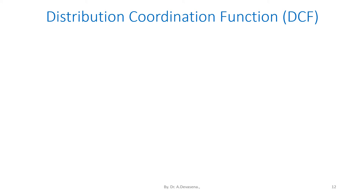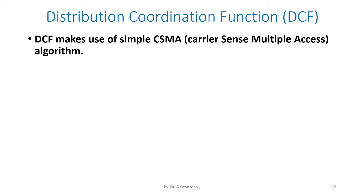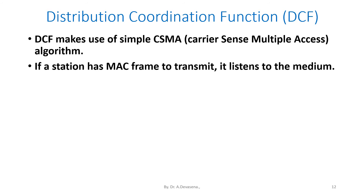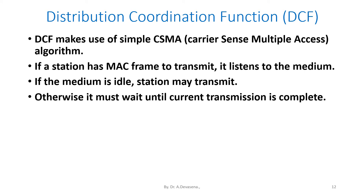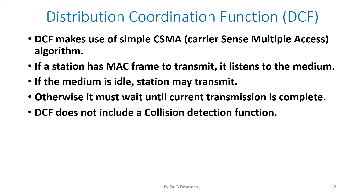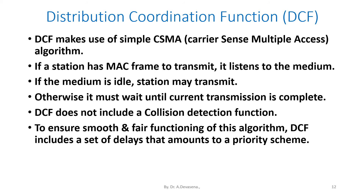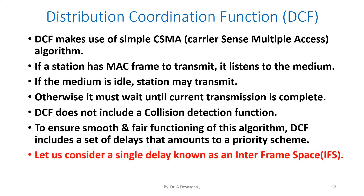Let us see the distributed coordination function DCF. DCF makes use of a simple CSMA, that is carrier sense multiple access algorithm. If a station has a MAC frame to transmit, it listens to the medium. If the medium is idle, the station may transmit; otherwise it must wait until the current transmission is complete. DCF does not include a collision detection function. To ensure smooth and fair functioning, DCF includes a set of delays that amount to a priority scheme, known as inter-frame space, that is IFS.